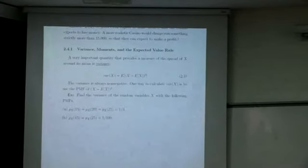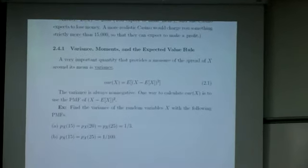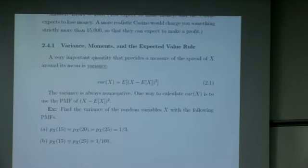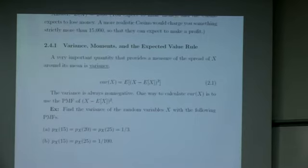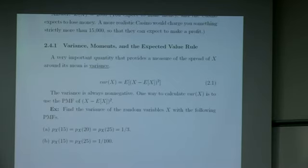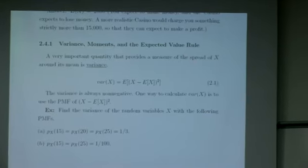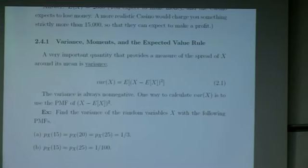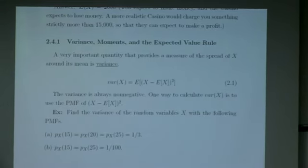Variance is a very important quantity. Remember, when we announce your exam grades, we usually announce the mean grade — which is just like expectation, an average grade — and we also announce the standard deviation from the mean. Variance provides a measure of how spread out x is around its mean, around its expectation. It's defined as the expected value of (x minus E[x]) squared.